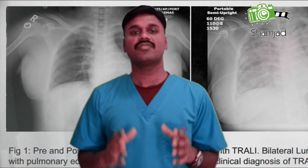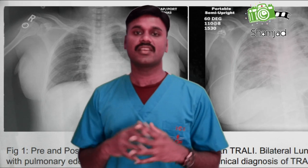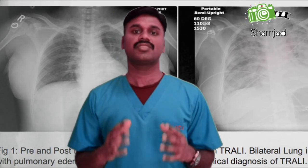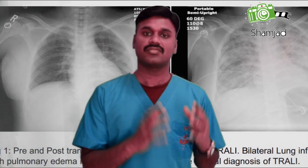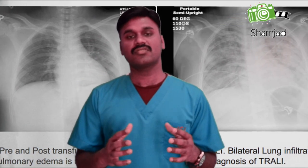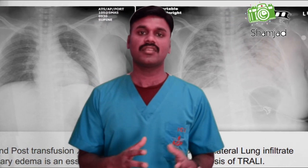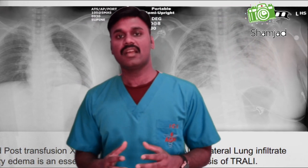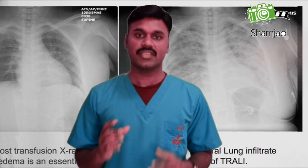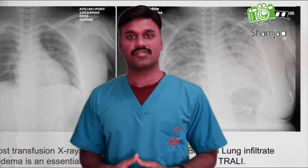Causes of disseminated intravascular coagulation include severe infection, obstetric complications, burns, trauma, and malignancies. Next one is transfusion-related complications. We know that blood transfusion is very risky. Transfusion-related acute lung injury and transfusion-related circulatory overload are the main complications within 6 hours of transfusion.